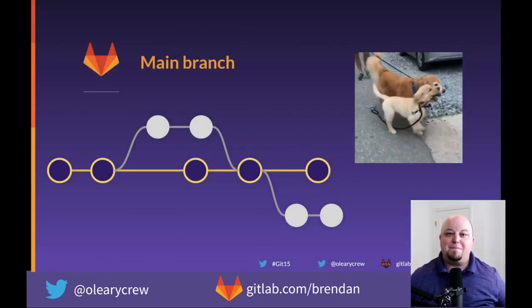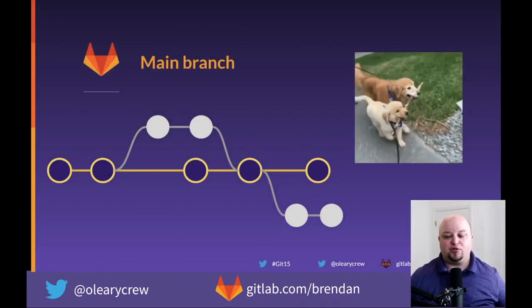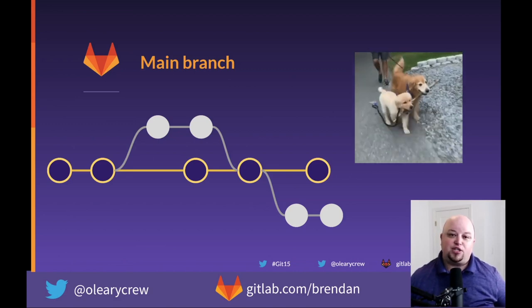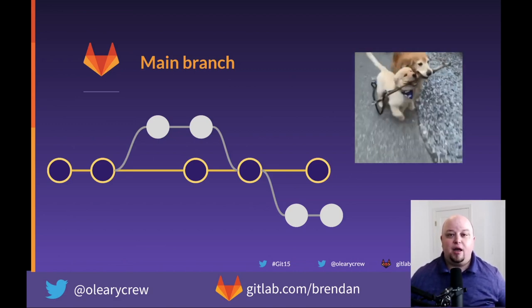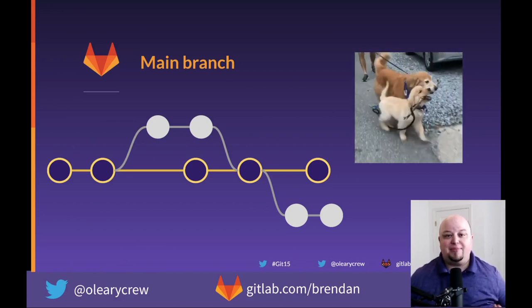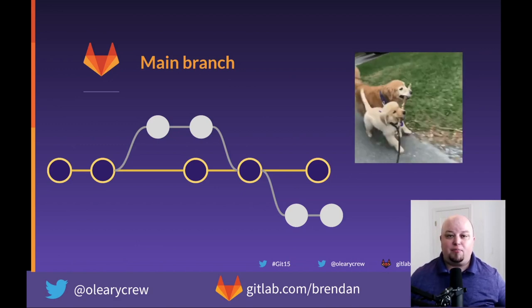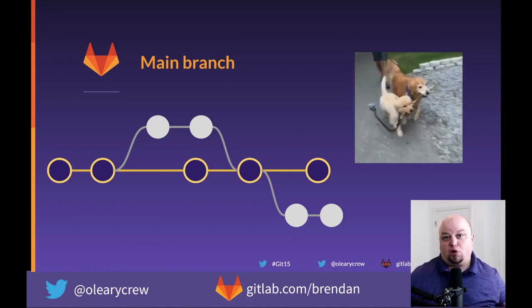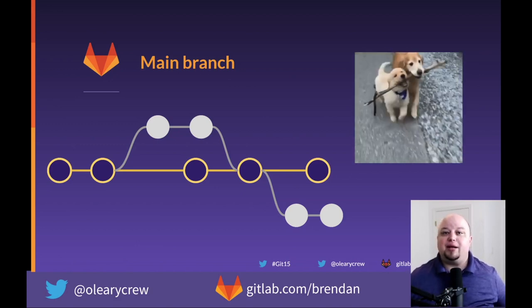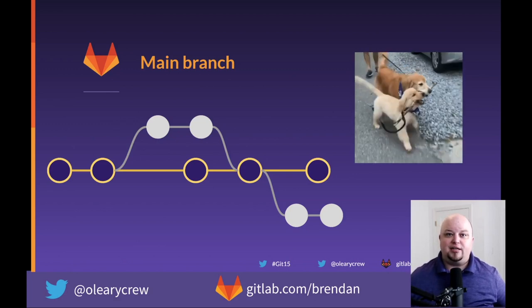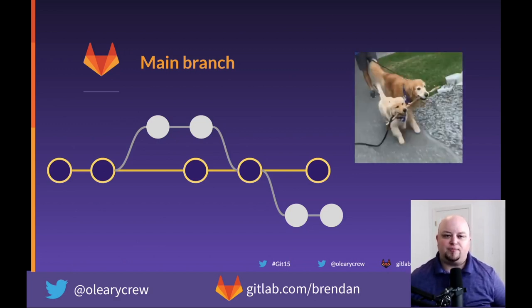Typically there is a main branch that represents the canonical source. Traditionally this branch is called master or main, but it can really be named anything — develop, production, trunk, cute dogs. There's no limit based on Git, but it's typical to have one clear canonical branch.